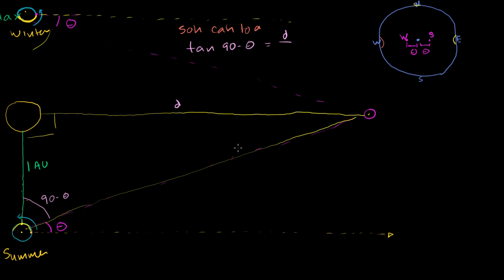This distance right over here, the distance to the star, or the distance from the sun to the star. We can later figure out the distance from the Earth to the star. It's not going to be too different, because the star is so far away. But the distance from the sun to the star divided by the adjacent side, divided by one astronomical unit. And I'm assuming everything is in astronomical units. So you can multiply both sides by one, and you'll get the distance in astronomical units. The distance is equal to the tangent of 90 minus theta. Not too bad.